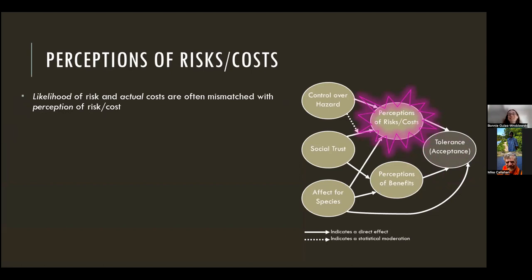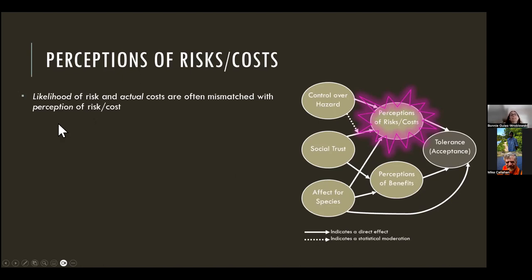Tolerance in this model is directly affected by: perceptions of risks and costs, perceptions of benefits, and affect — which is emotion for the species. Perceptions of risks and costs are not necessarily true, but they are true to the person who holds them. The likelihood of risk and actual costs are often mismatched with the perception of risk and costs.